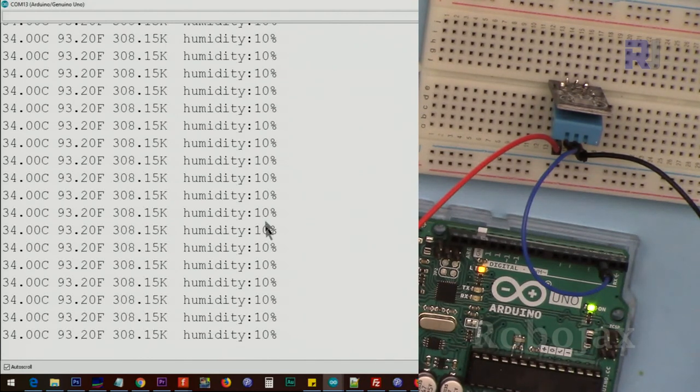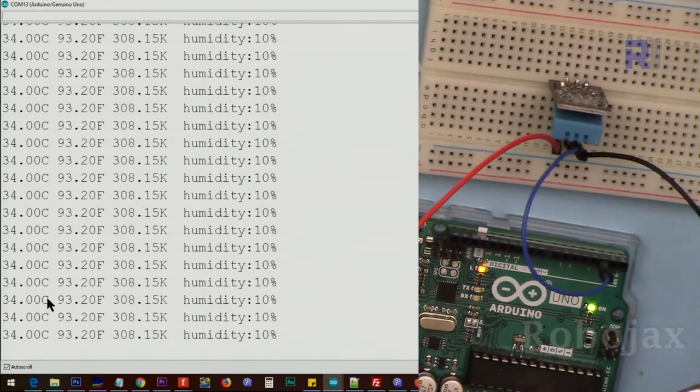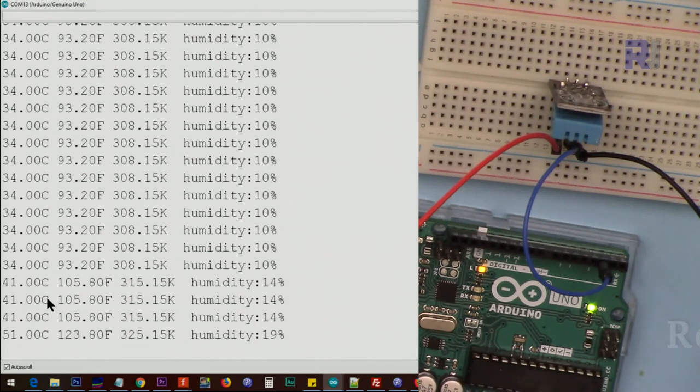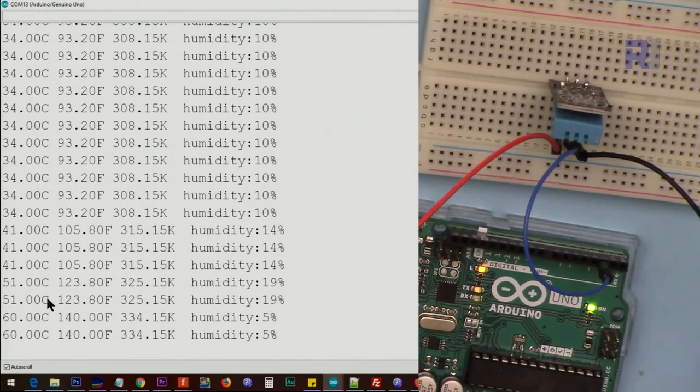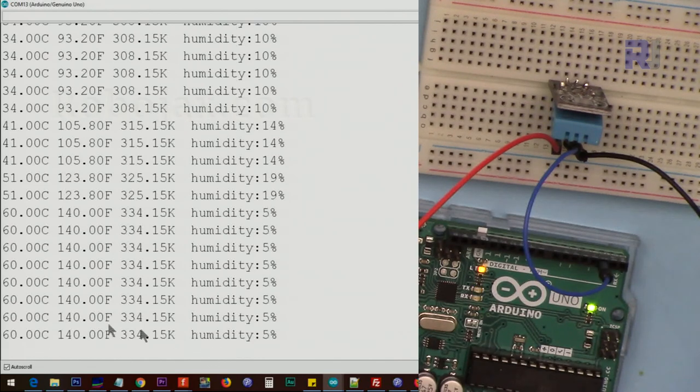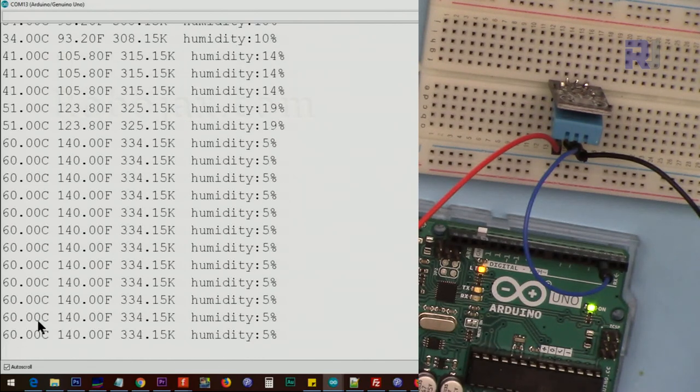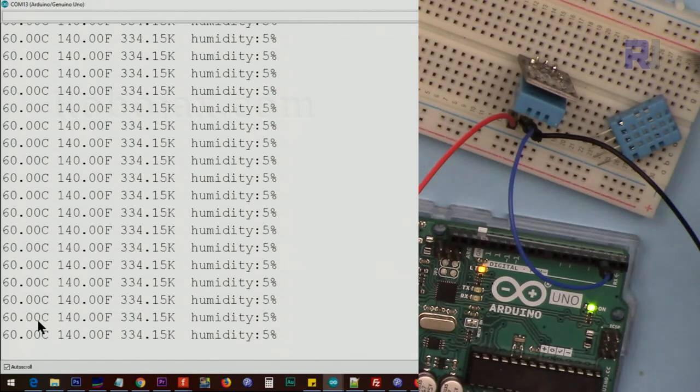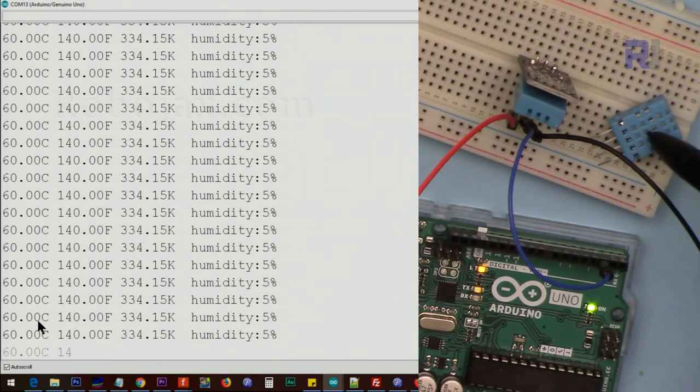Let me apply some heat with the heat gun. Here are the values in Fahrenheit, Kelvin, and Celsius. This was the lecture of introduction to DHT11 temperature and humidity sensor.